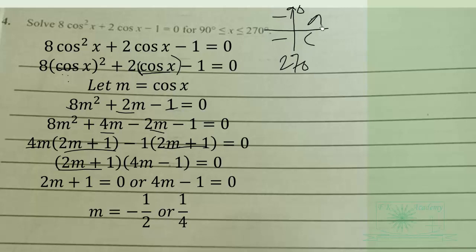first quadrant, all are positive. So that is not what we are looking for. We are looking for where cos is negative, so the negative half is what we are going to use because cos is negative in this quadrant.